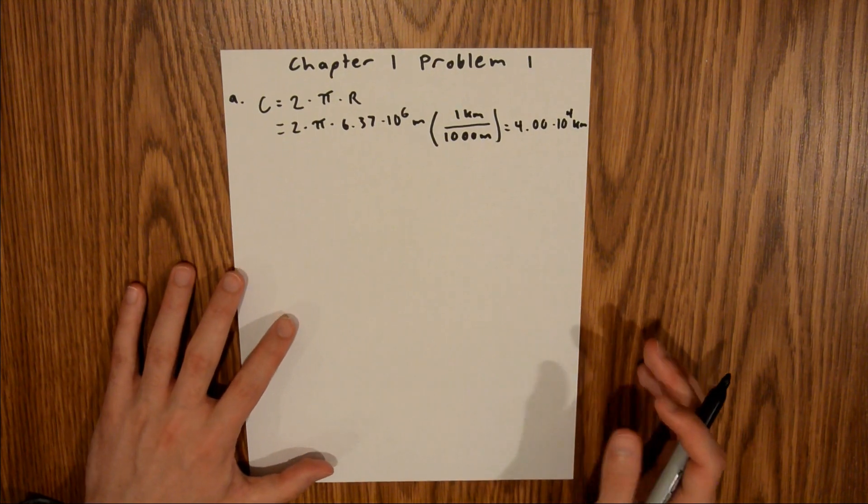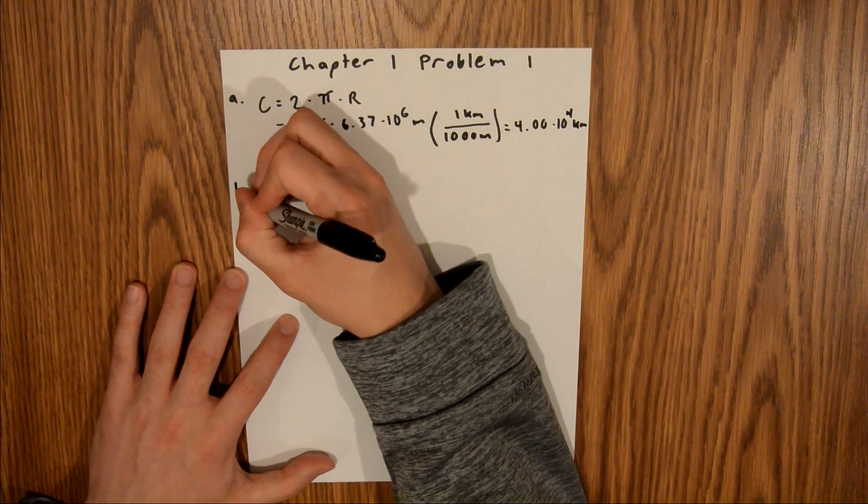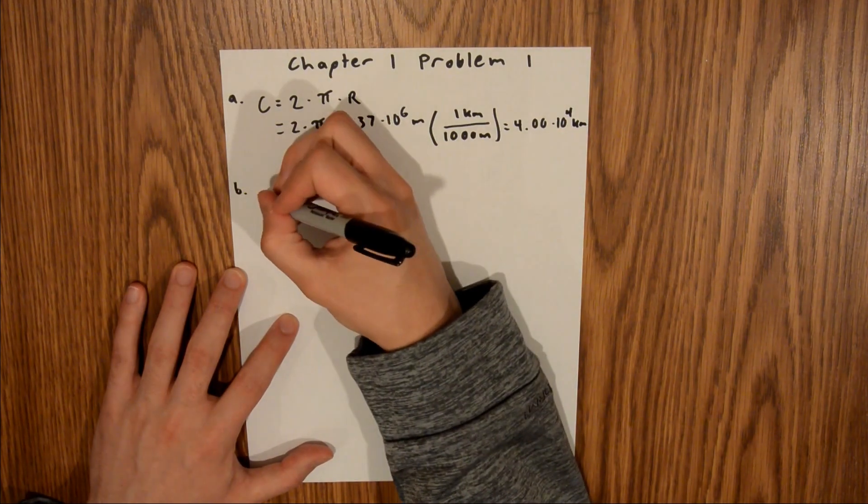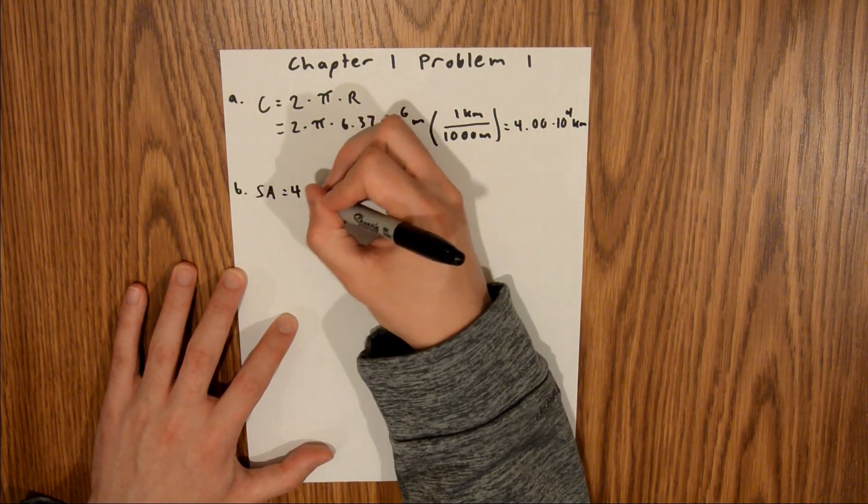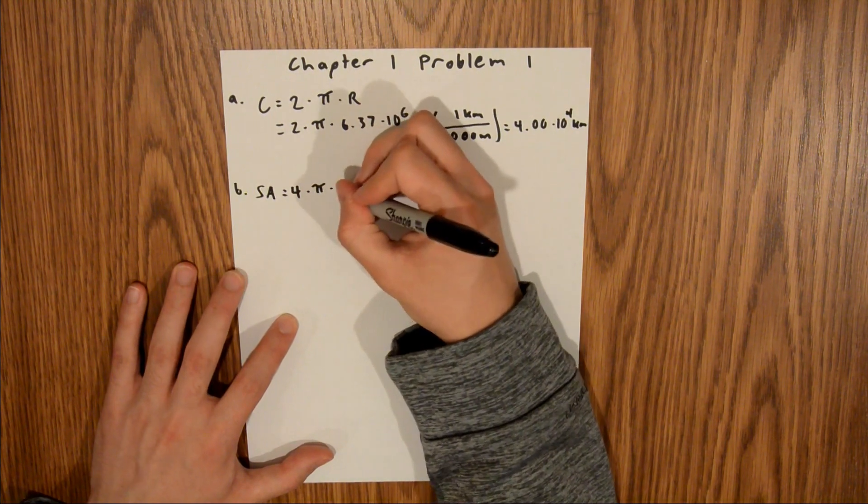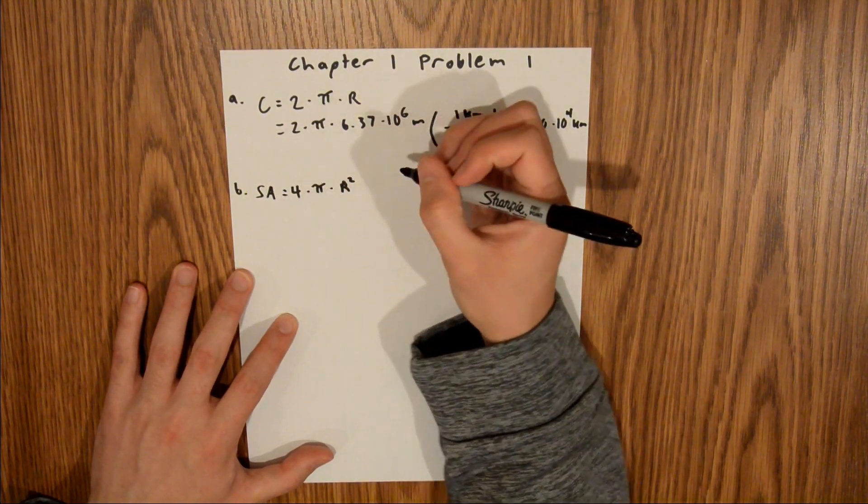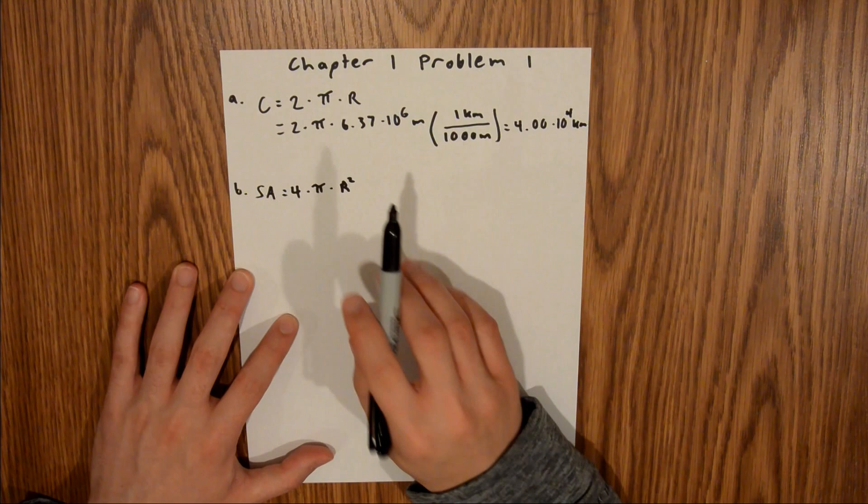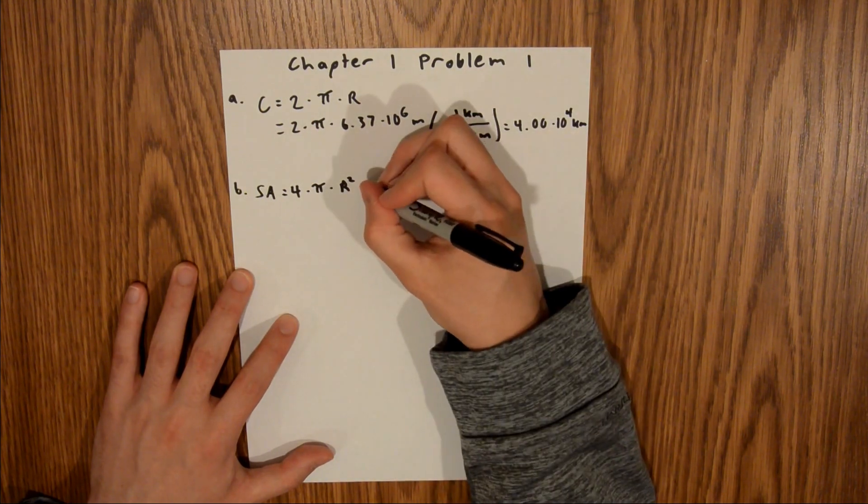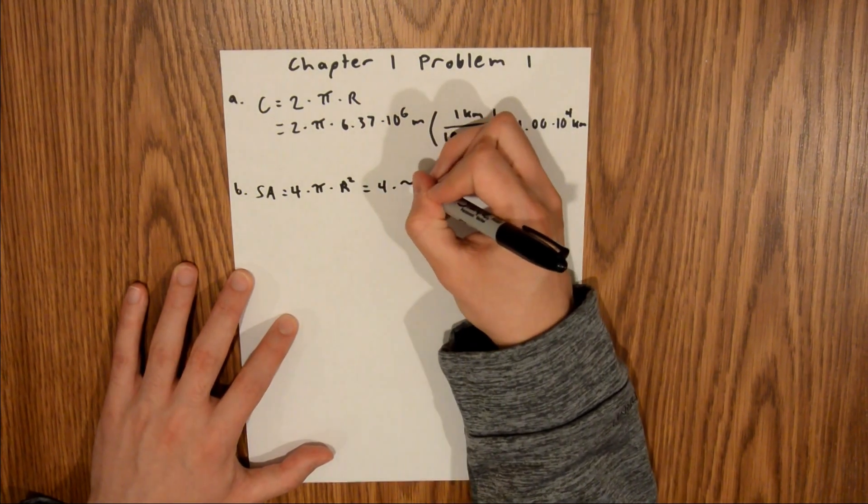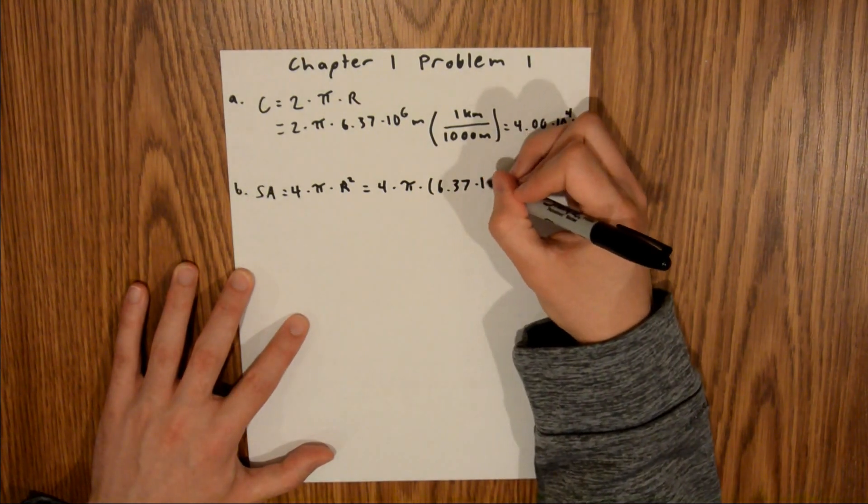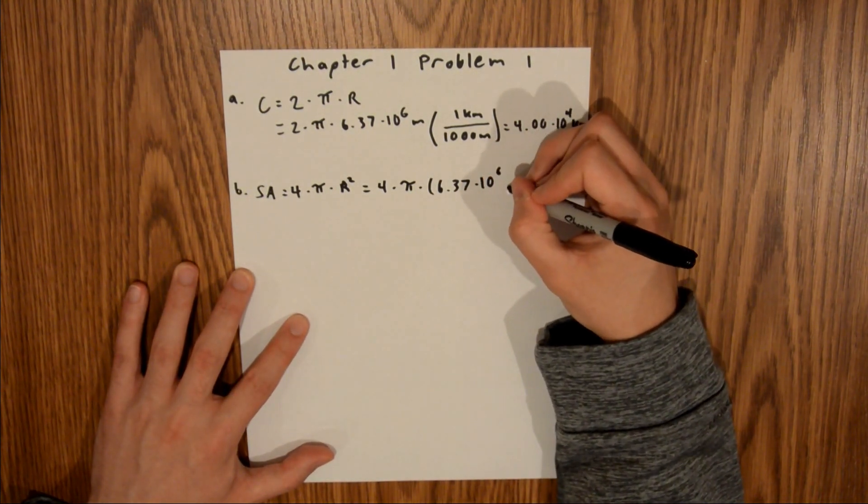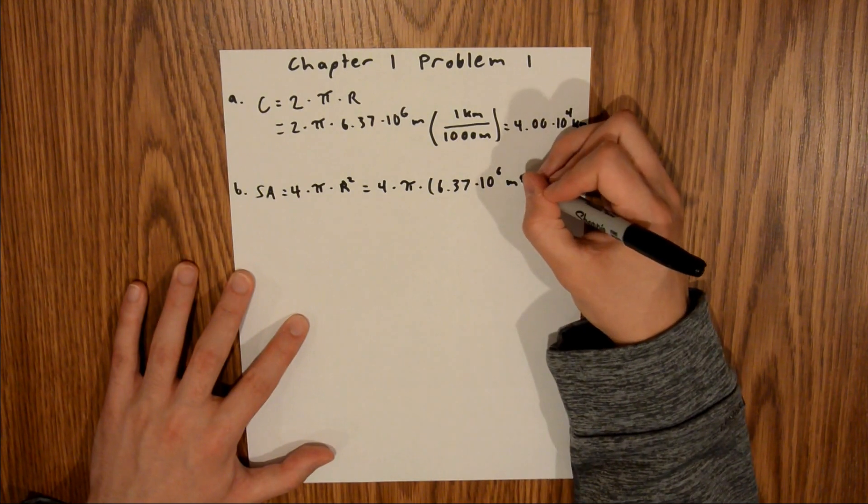And then if we move on to Part B, we are asked to find the surface area, and so the surface area of a sphere is equal to 4 times pi times r squared. And again, we can use the same radius that we used up here, and so that's 4 times pi times 6.37 times 10 to the 6th meters squared.